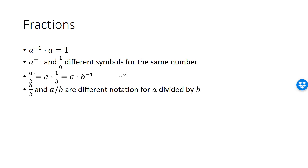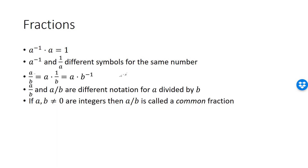We have two ways of writing division, and they mean exactly the same thing. When we divide two numbers, both the numerator and the denominator can be real numbers, as long as the denominator is not 0. However, when both A and B are integers, then A divided by B is called a common fraction, which is a rational number. If one of them is not an integer, then A divided by B is called a non-common fraction, or simply just a fraction.